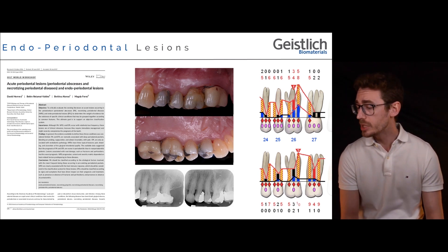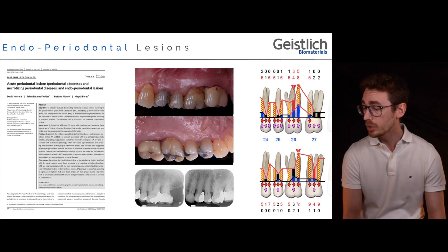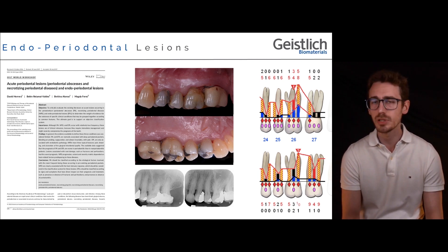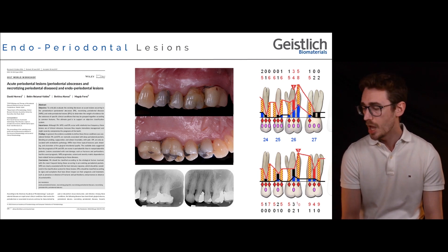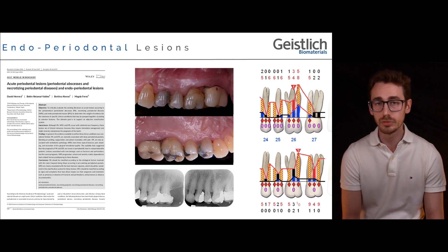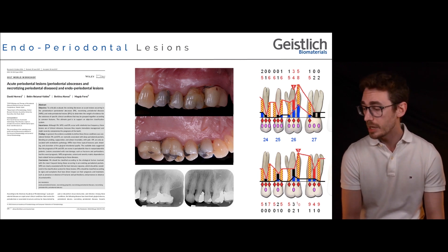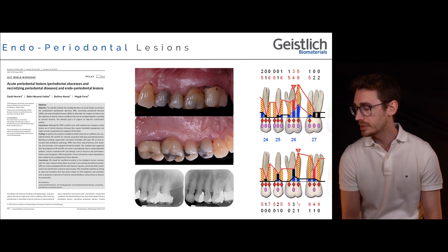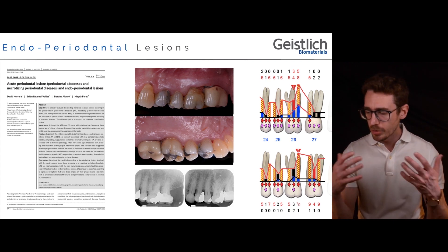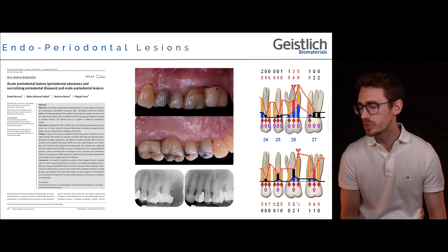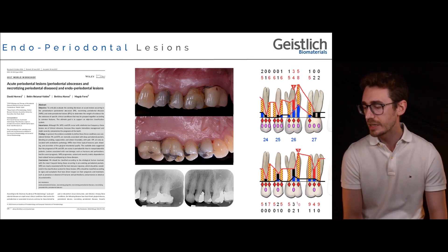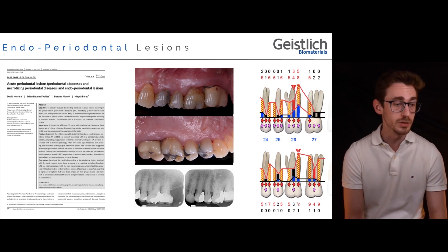We can appreciate how the whole sextant of the patient has been rehabilitated with clearly over-contoured restorations and a crown on tooth number 27, which invade the space of the supracrestal soft tissues and present a morphology that does not provide adequate access for self-performed plaque control.